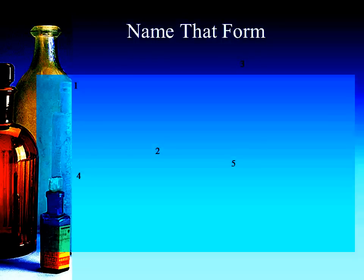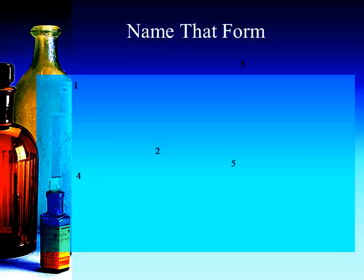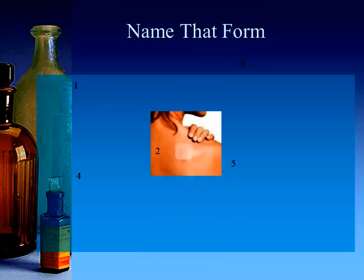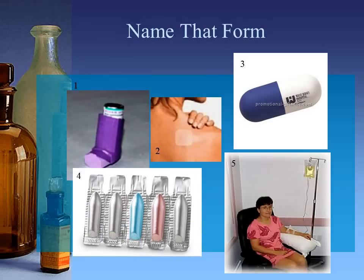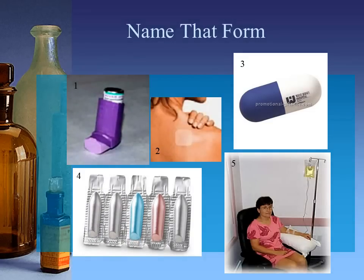Now that we've reviewed the most common forms of medications, let's see how you do with identifying those forms. I'm going to show you some medications and see how you do with naming the form that each one represents. Take a piece of paper, label it 1 through 5, and write down the form that represents each medication shown.